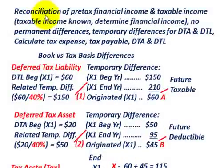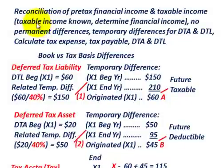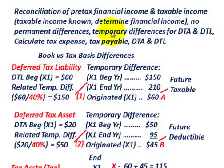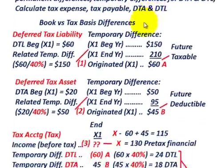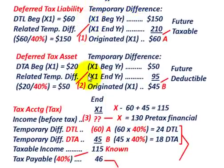We're going to go through an example where we look at the reconciliation of pre-tax financial income and taxable income. For this example, we're going to know what our taxable income is, but we'll have to determine pre-tax financial income. There are no permanent differences here, but there will be temporary differences resulting in a deferred tax asset and a deferred tax liability.